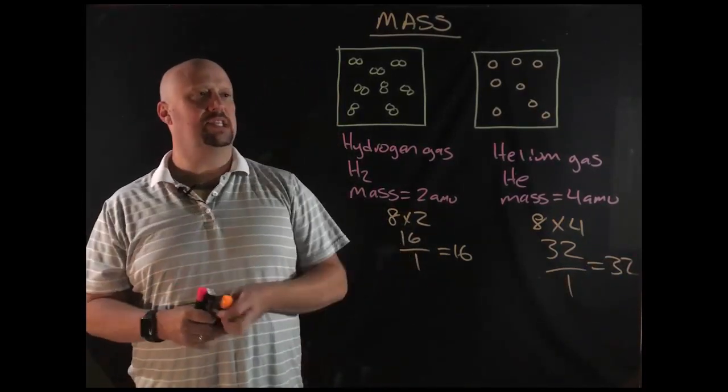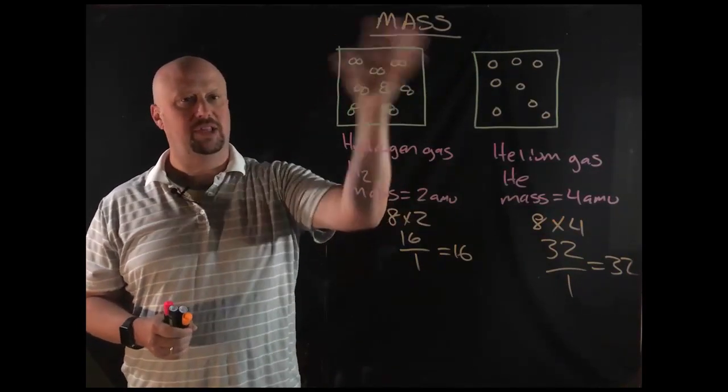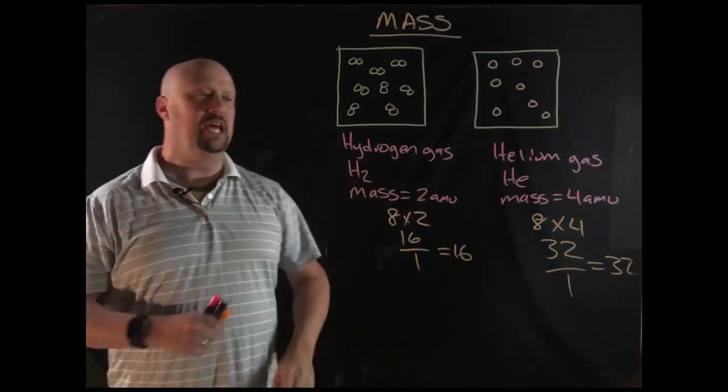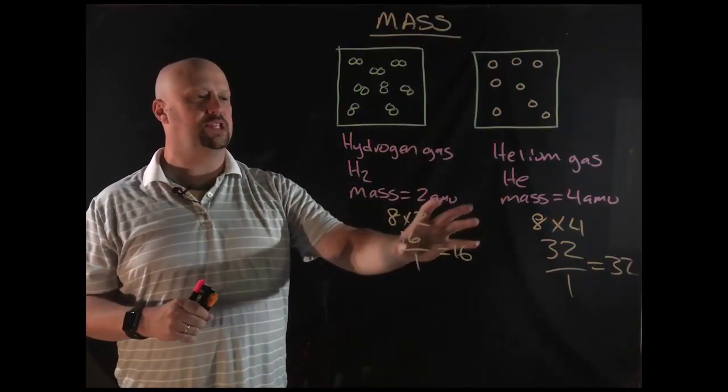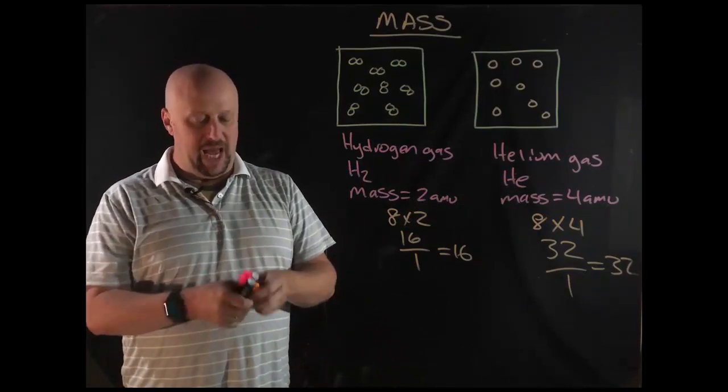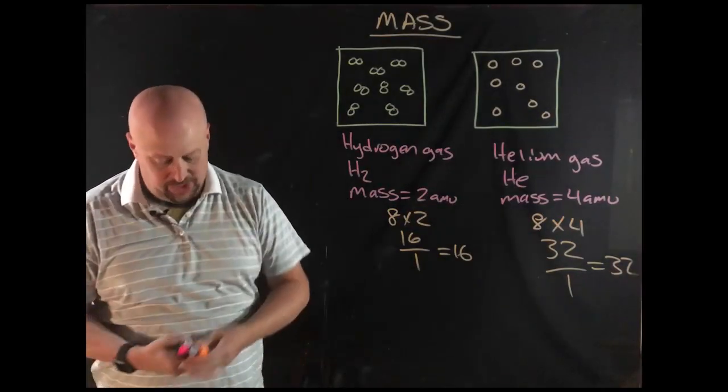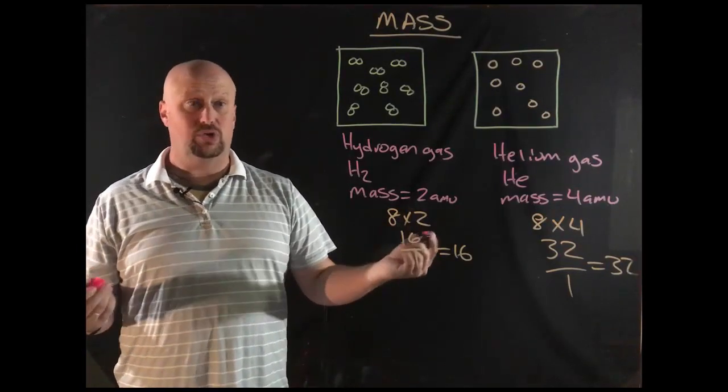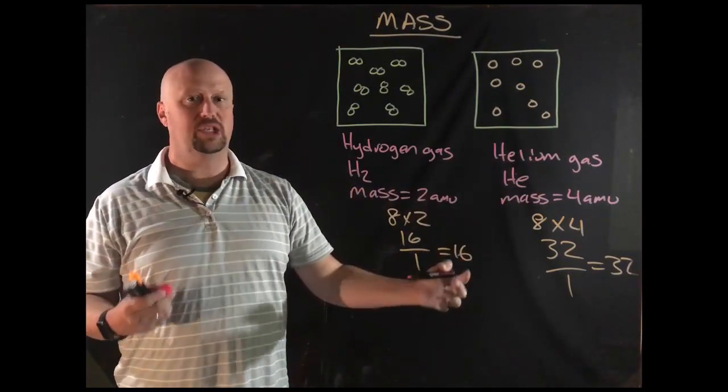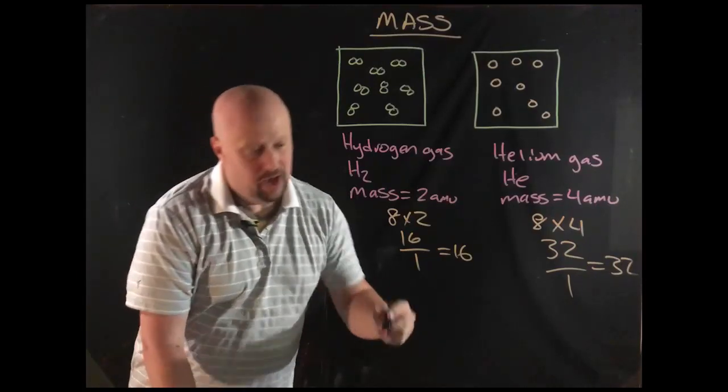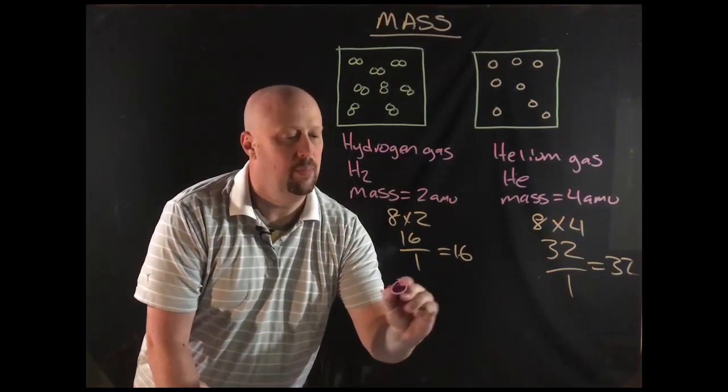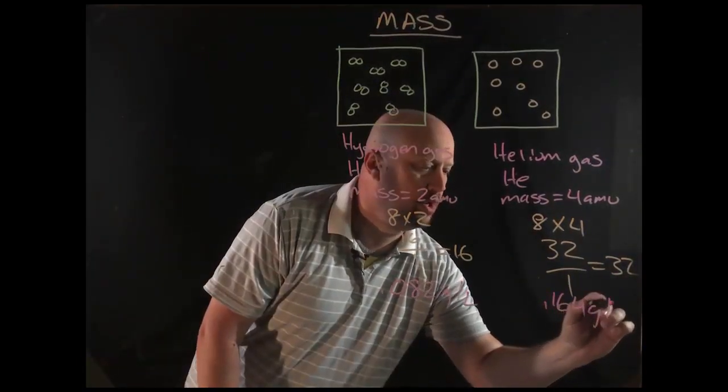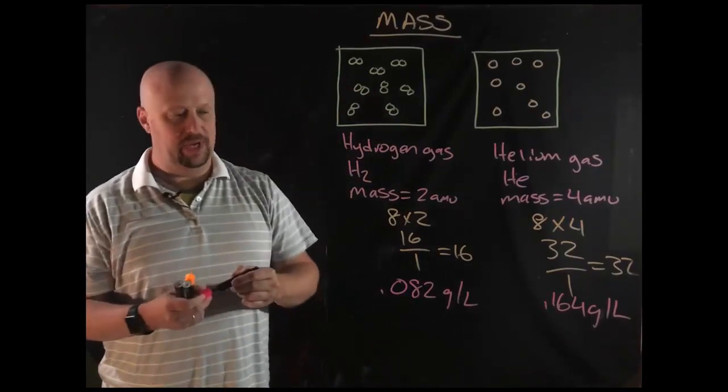And what that shows us is that mass matters for density. Assuming that the volume that's taken up is the same, assuming that the packing of the particles together is pretty much the same, then mass is sort of the first thing that affects this. By the way, if we actually looked up what are the real values of the density of each of the gases, you would see that the helium is going to be about twice what the hydrogen is. So the actual density of hydrogen gas is 0.082 grams per liter and helium is 0.164 grams per liter.